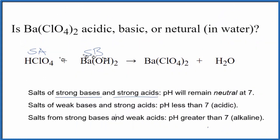That tells us when these two react, when they neutralize each other, they make our barium perchlorate, we can see that the pH will remain neutral at 7.